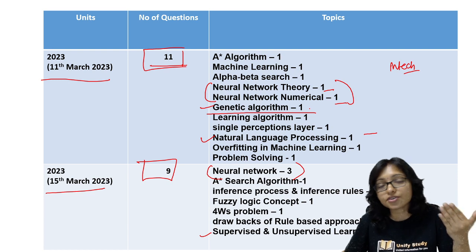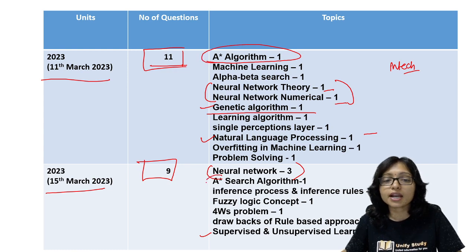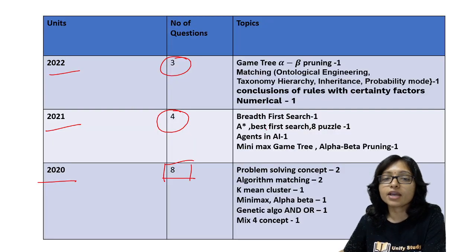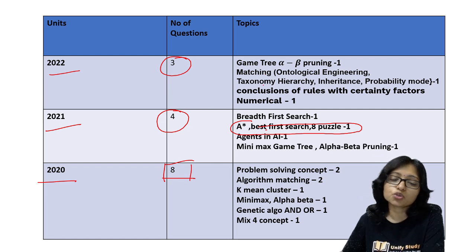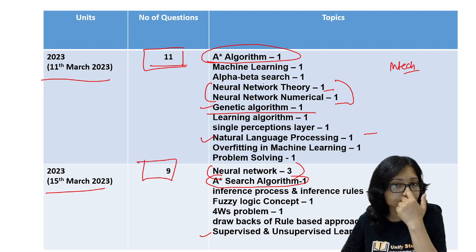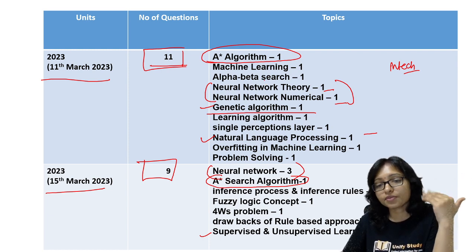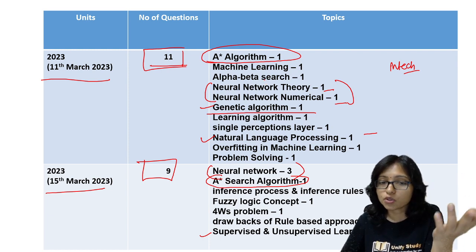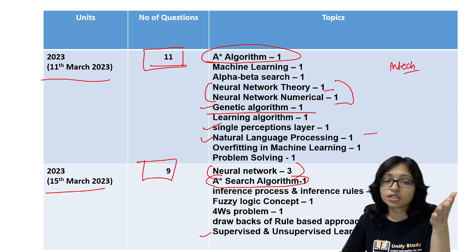In that current trend area they are asking questions. And A-star algorithm is always very popular. A-star algorithm, now also they are asking, previously also they asked. Previously also, if you saw, A-star algorithm is best for search. Here also you can see the A-star algorithm was previously there. So game tree, alpha-beta pruning, minimax game tree - they are already asking, previously also they asked the question, now also they are asking. In neural network, you can see the single layer perceptron, multi-layer perceptron, this area.